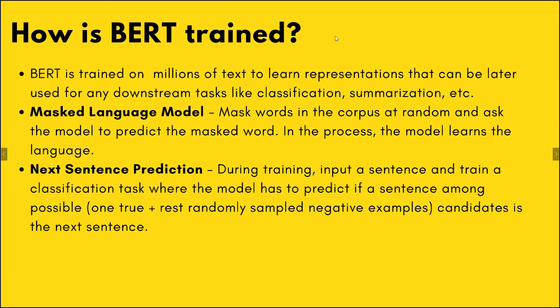How is BERT trained? BERT is trained using two methods. Let's say you have a large corpus of hundreds of thousands of sentences. To learn the language of that corpus, BERT uses something called Masked Language Model. You randomly select words in the corpus, mask them, and ask BERT to predict those masked words. In this process, BERT learns the language.